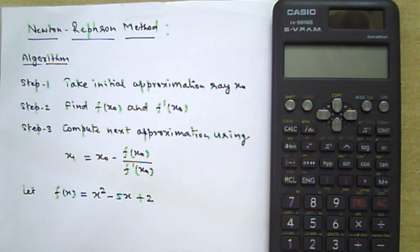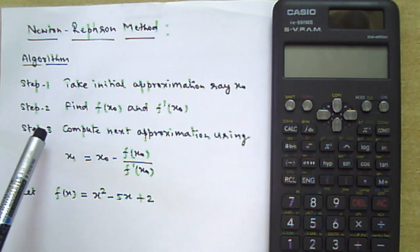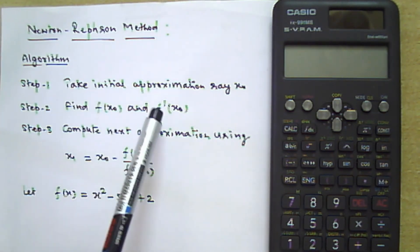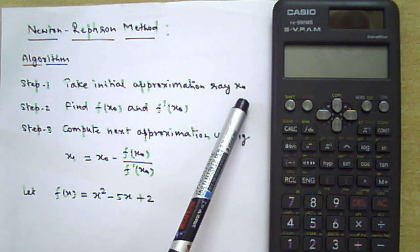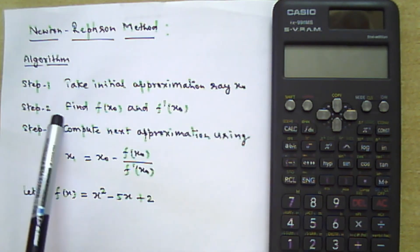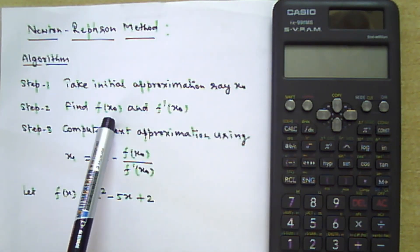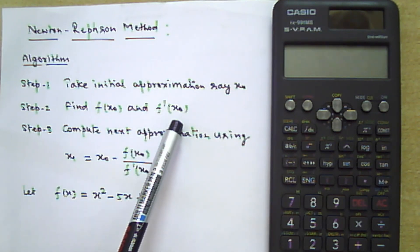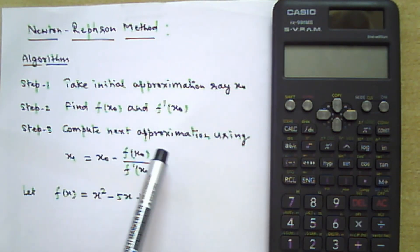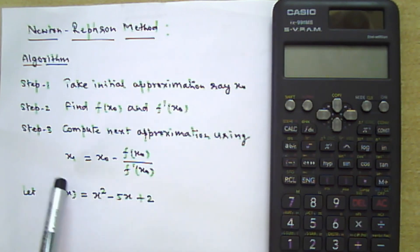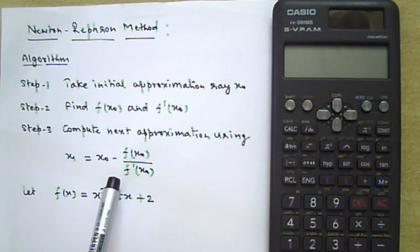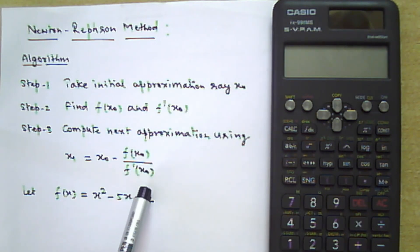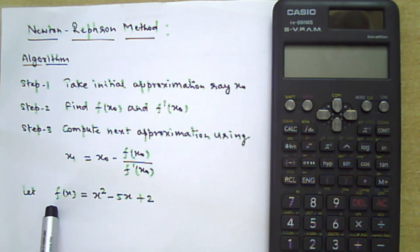We can summarize the Newton-Raphson method in three steps. Step one: take an initial approximation x₀. Step two: find the value of the function at x₀ and the first derivative at x₀. Step three: compute the next approximation using the Newton-Raphson formula: x₁ = x₀ - f(x₀) / f'(x₀).